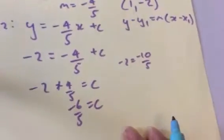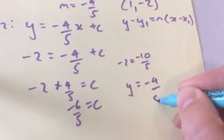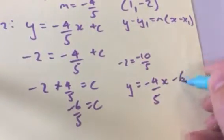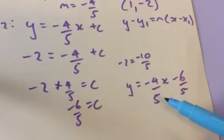Obviously, you could use a calculator to help you there. But you'd have y equal to minus 4 fifths x minus 6 over 5. That's in the y to mx plus c form.